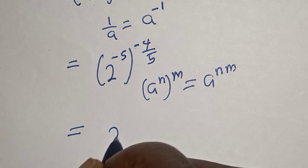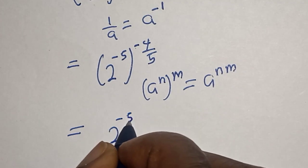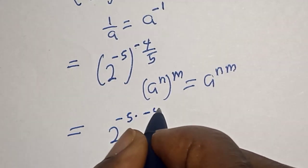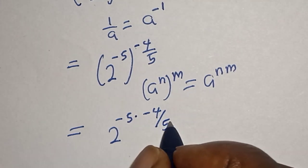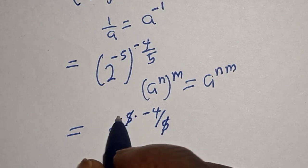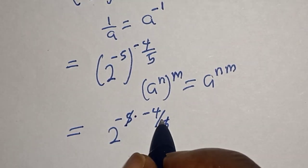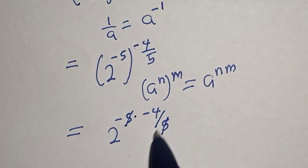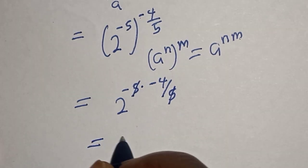Then this is equal to 2 raised to power minus 5 multiplied by minus 4 over 5, and this one will cancel this. If you multiply minus 1 by minus 4 you have plus 4. This is equal to 2 raised to power 4.